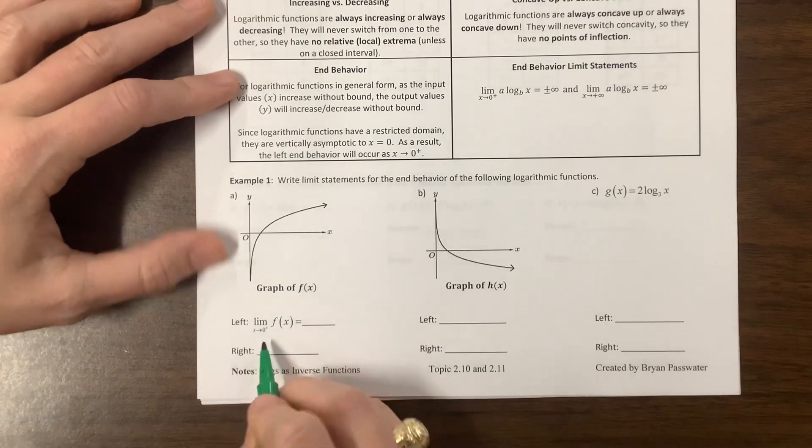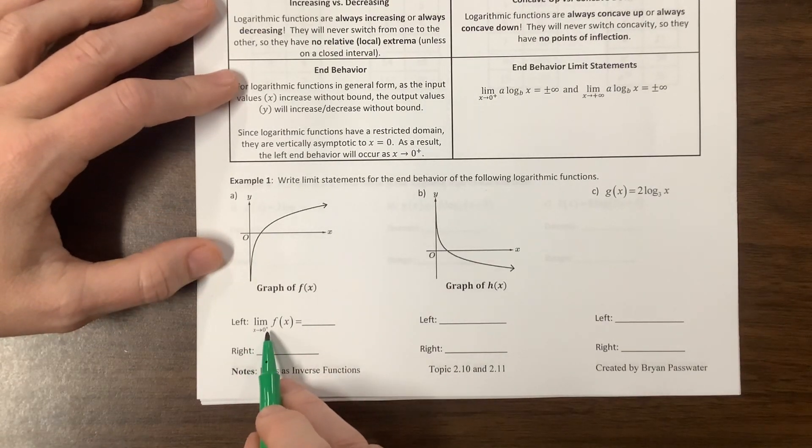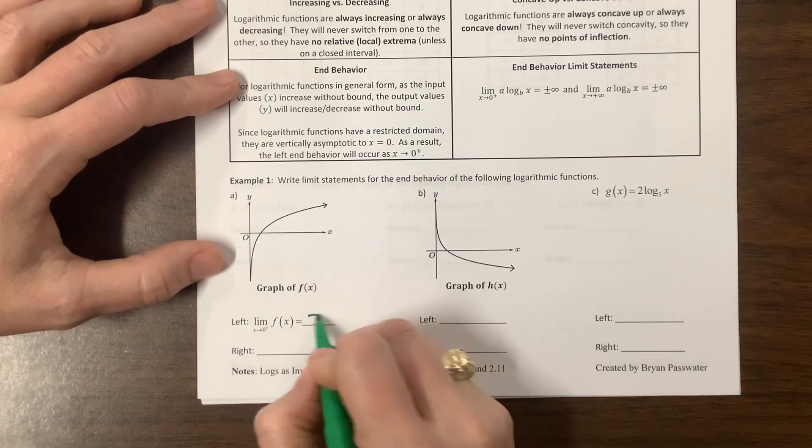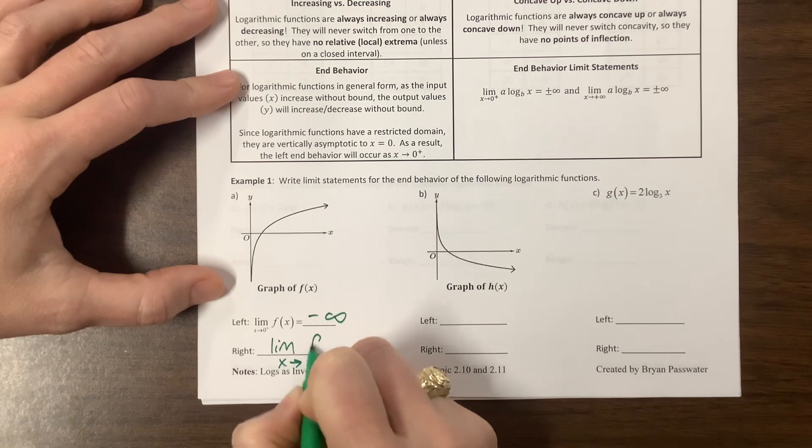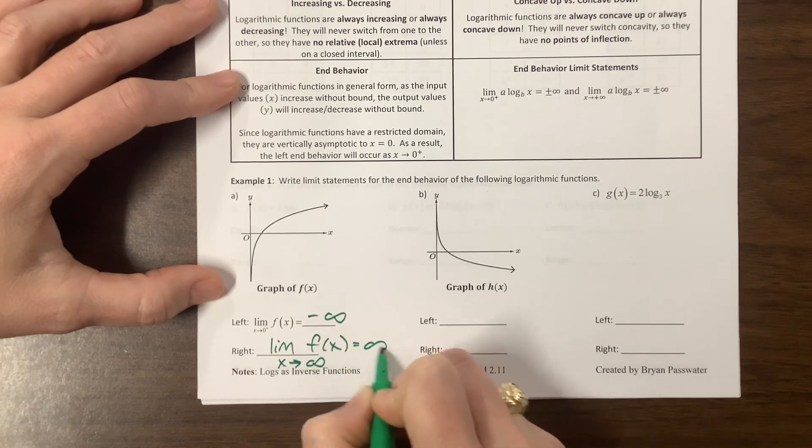So on this one, the limit as x goes to zero from the right, so coming this way, is negative infinity. The right would be the limit as x goes to infinity of, this is f of x, and that equals infinity.